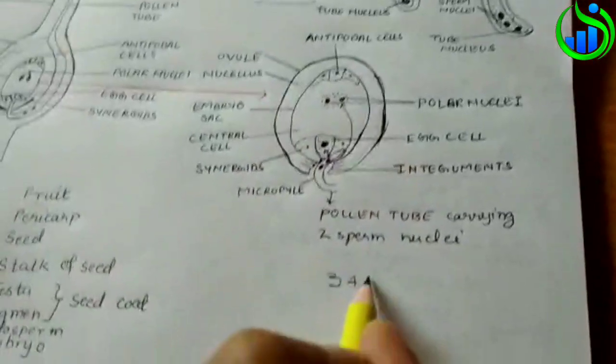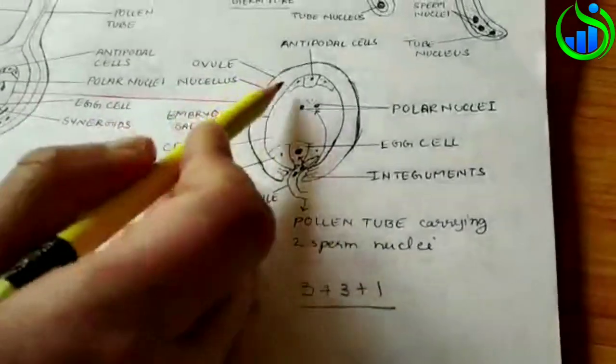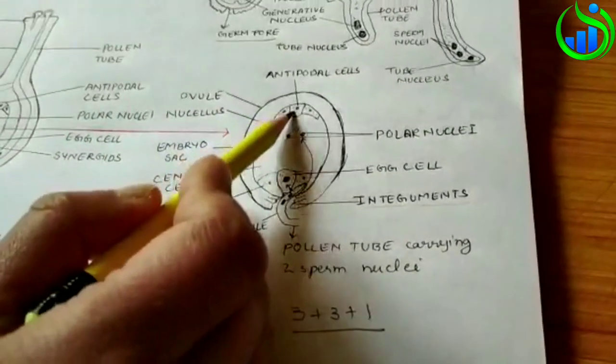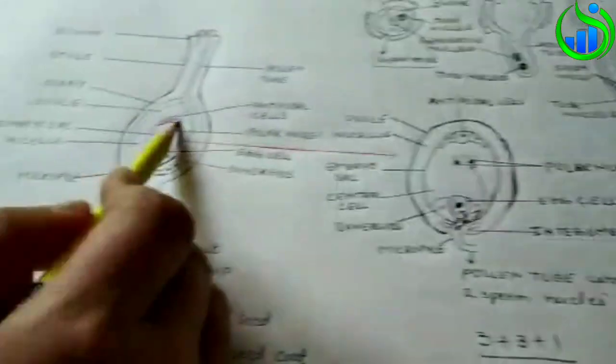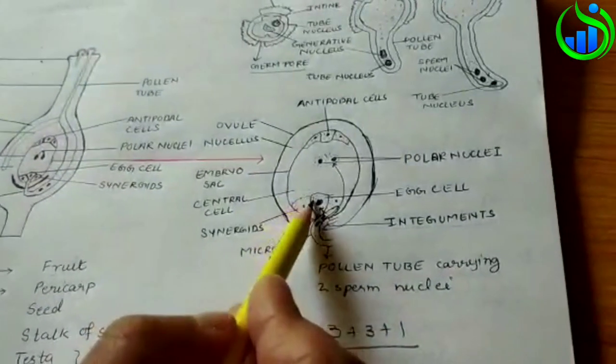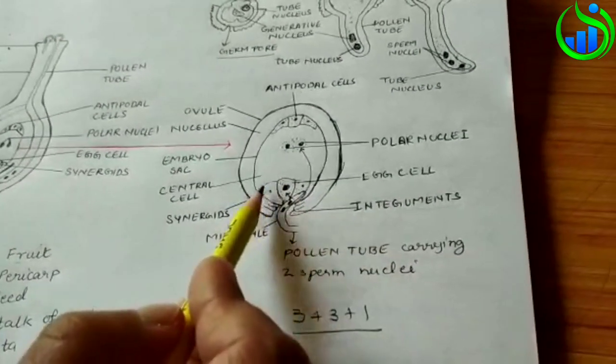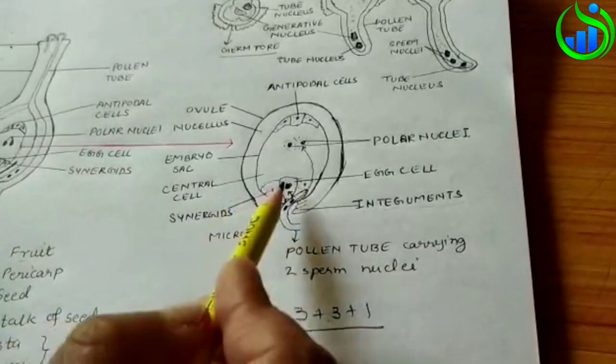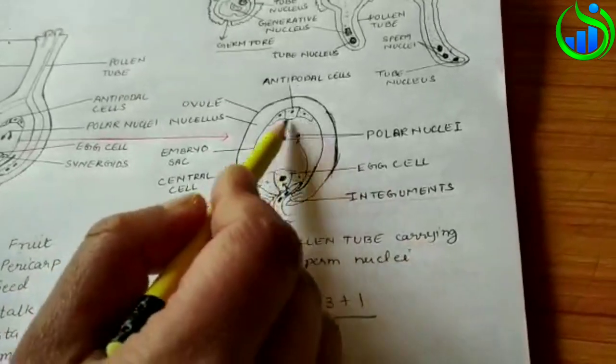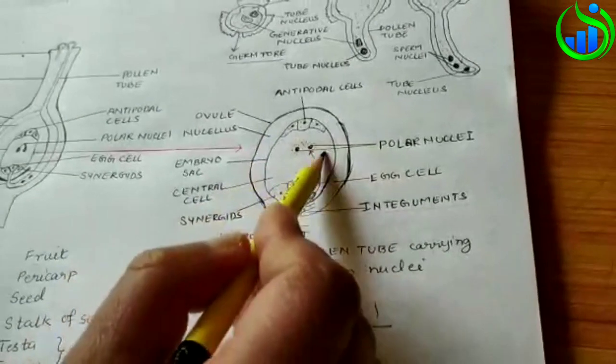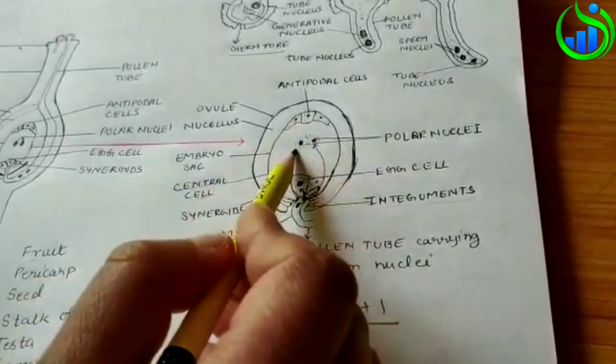This cell is called antipodal cells. This cell is called synergids and this cell is called egg cell. This cell is called the central cell. This is called the nucleus or the polar nucleus.